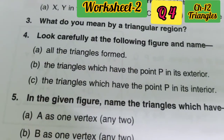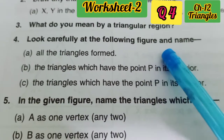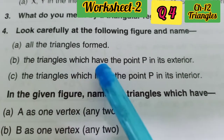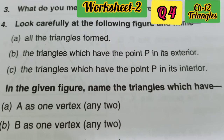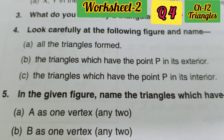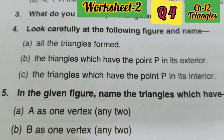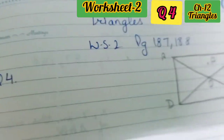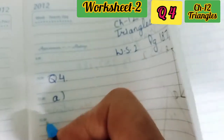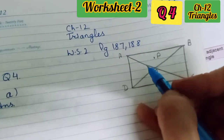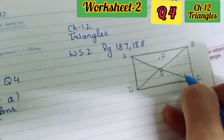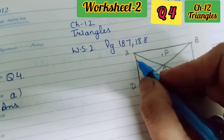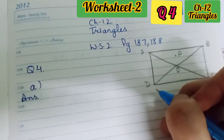Now look at question number 4: look carefully at the following figure and name all the triangles found, the triangles which have point P in its exterior, and the triangles which have point P in its interior. First, make this figure in your registers. How many triangles are formed? Counting: 1, 2, 3, 4, 5, 6, 7, 8 — so 8 triangles are formed.